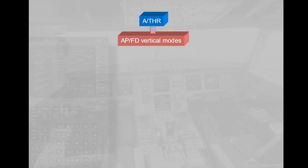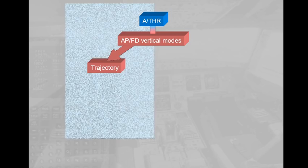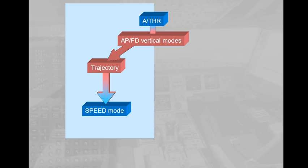The autothrust modes are automatically linked to autopilot flight director vertical modes. When the autopilot flight director vertical mode controls a trajectory — for example altitude hold, vertical speed, or glide slope — the autothrust is in speed mode.